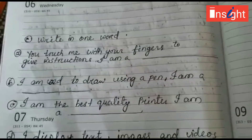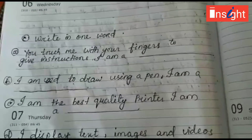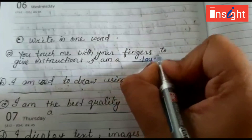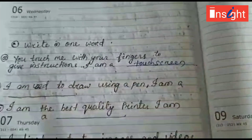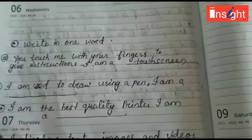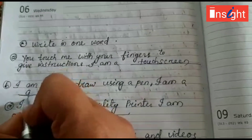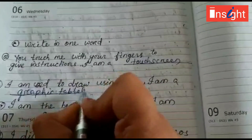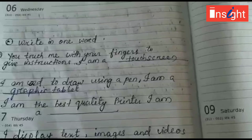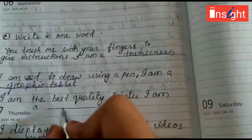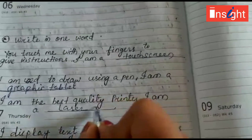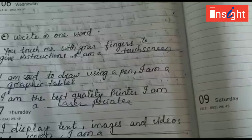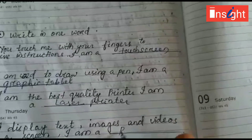Write in one word. You touch me with your fingers to give instructions — I am a touch screen. I am used to draw using a pen — I am a graphic tablet. I am the best quality printer — I am a laser printer. I display text, images, and videos on a screen — I am a projector.